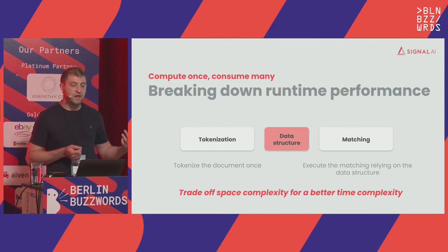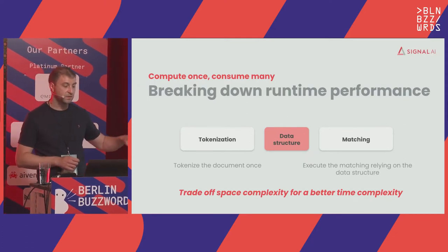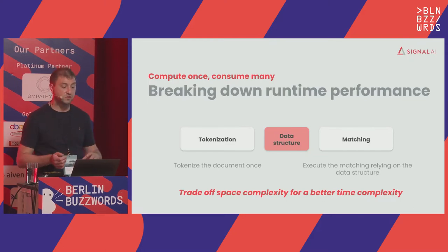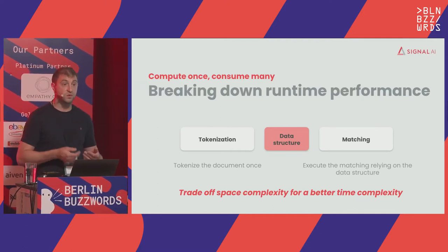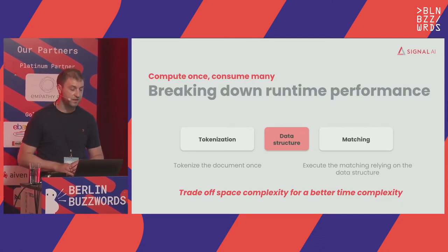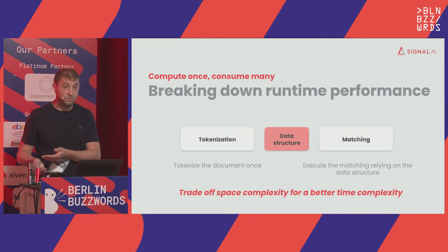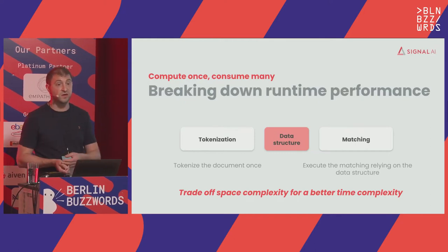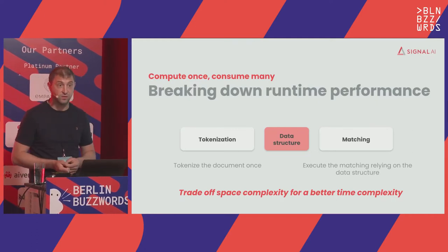If we take a different approach, we can introduce a tokenization that tokenizes the document only once, saves these tokens into a temporary data structure, and then uses that data structure to leverage all the different matching we have to do. We are just splitting two responsibilities and trading off some space complexity to achieve better time complexity. By introducing a data structure in the middle, we break the performance from O(M × N) to O(M) + O(N), and we'll see how this produces incredible results.